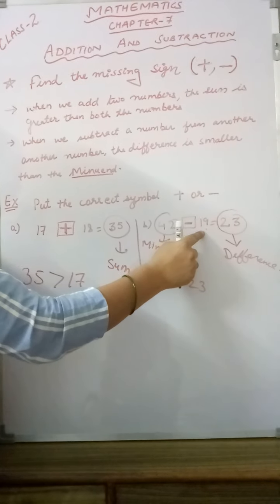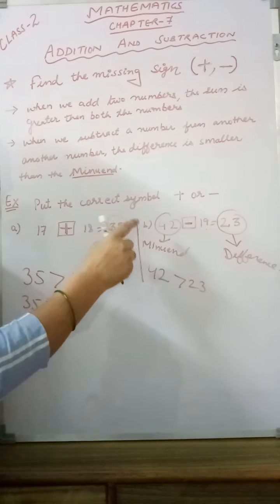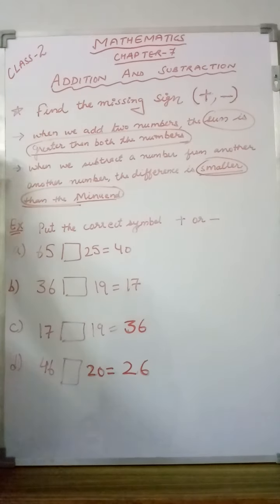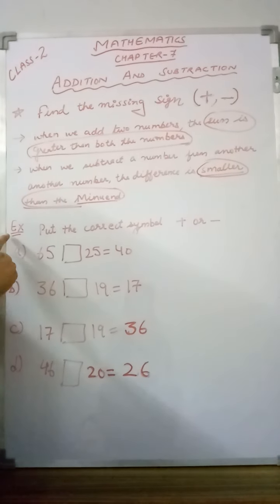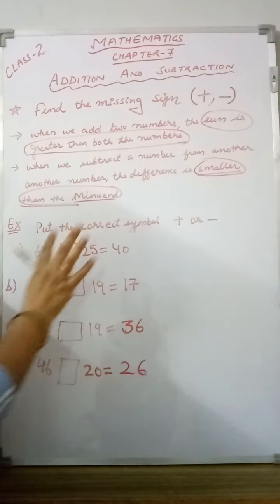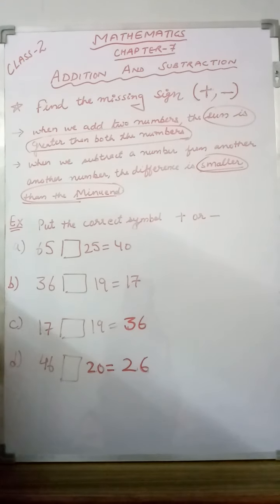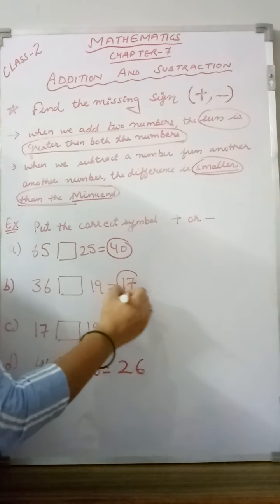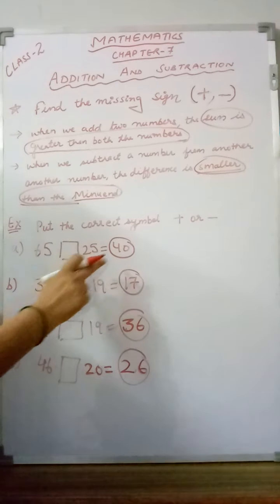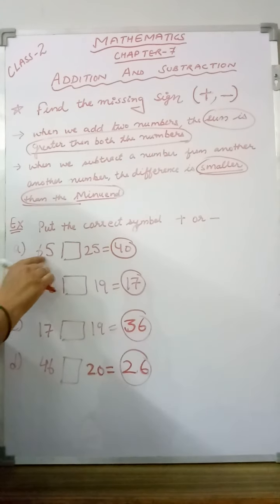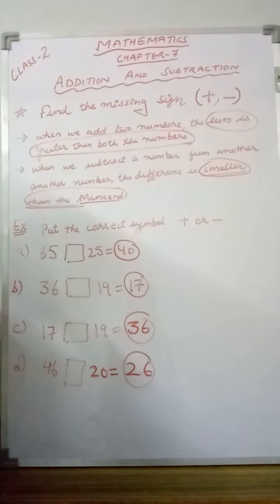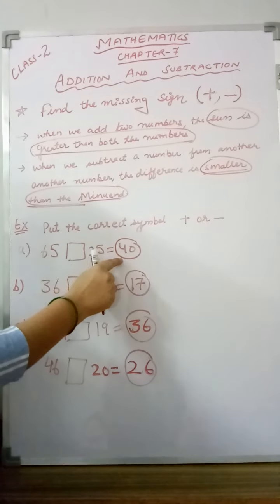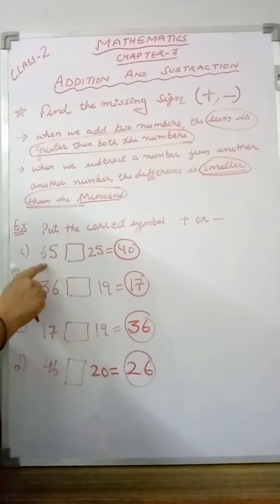23 is there. This 23 is greater than one number and less than the other. So this is another way to recognize whether it is a minus or plus sign. Students, I have taken some more examples to clear these two rules for finding the missing sign. The question is the same — put the correct symbol, plus or minus. So four examples are taken. Again, you have to check only the answer number. The answer here is 40. Is 40 greater than both the numbers? If no, then 40 is bigger than only one number and smaller than the other — it means minus sign.